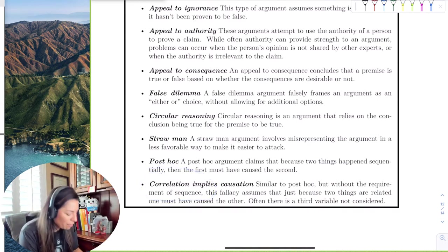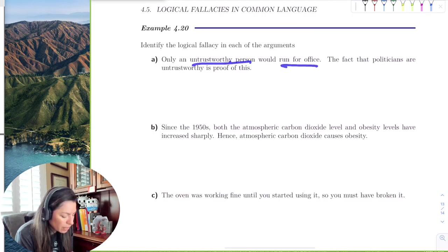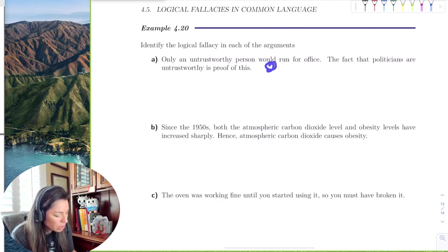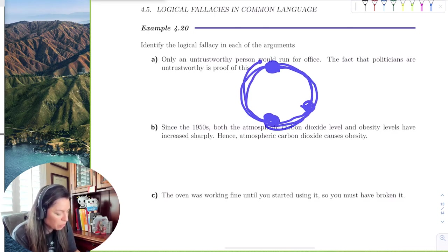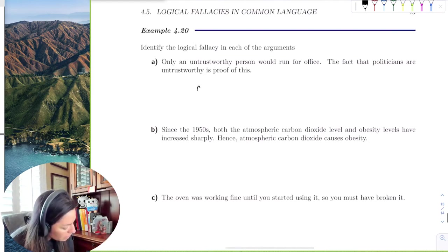Okay, so let's look at the examples. The first one is only an untrustworthy person would run for office. Because politicians are untrustworthy, that is proof of this, right? So what they're saying is, here's an untrustworthy person that runs for office, who's a politician, and a politician is untrustworthy. So here's an untrustworthy person, here's the politician who is untrustworthy, because they run for office would be untrustworthy. And then it just becomes like, which is the premise, which is the argument? So we say that this is circular reasoning.